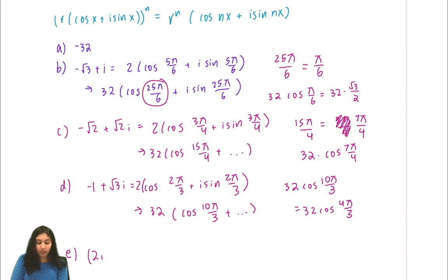In part E, again this is pretty easy just to take to the power 5. It's just 2i to the power 5, which is 32i, so our real part here is 0.